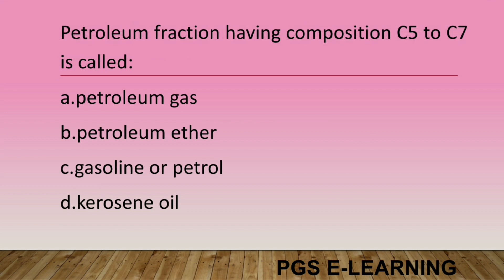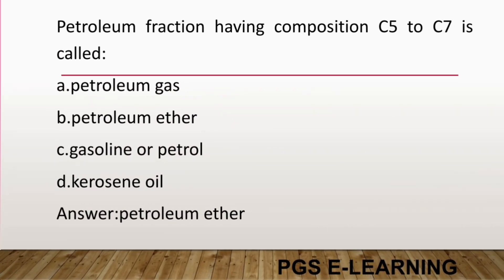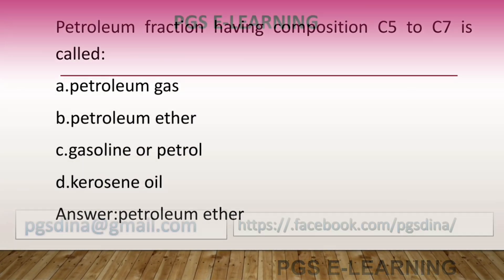The petroleum fraction having composition C5 to C7 is: petroleum gas, petroleum ether, gasoline/petrol, or kerosene oil. Correct answer is petroleum ether.